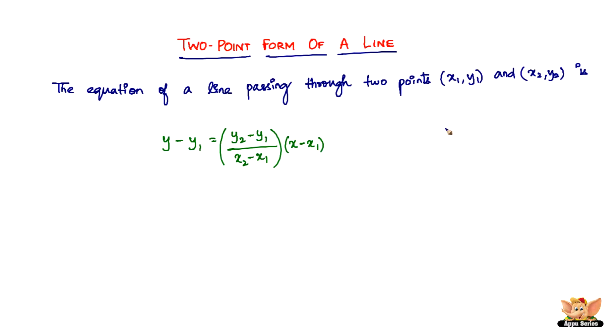You know, m is given by what? m is given by y2 minus y1 divided by x2 minus x1. So this is nothing but m. So it is y minus y1 equals m times x minus x1.